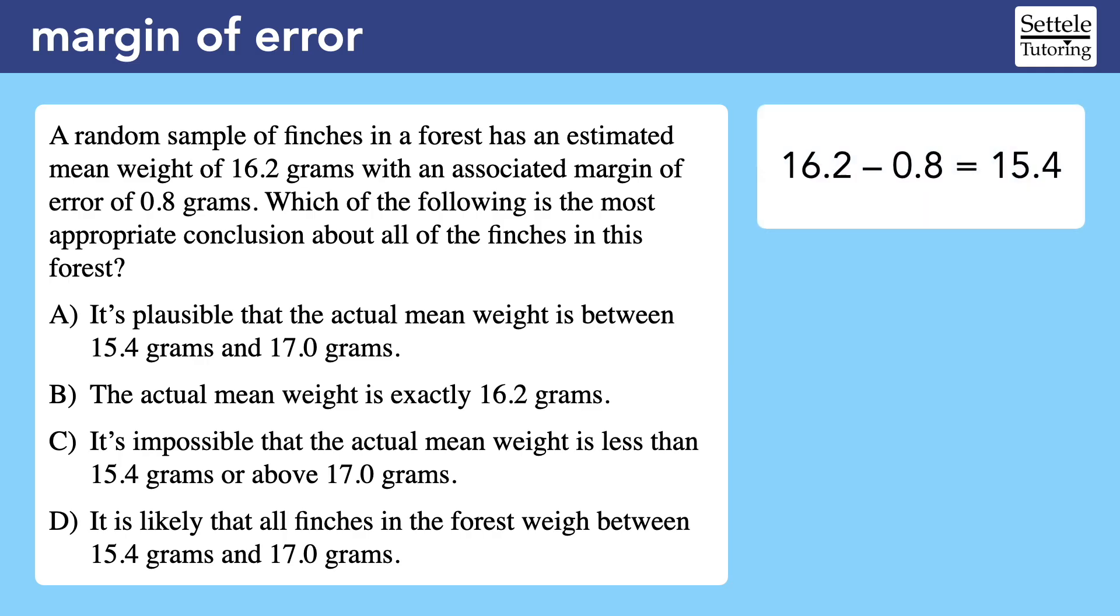16.2 minus 0.8 is 15.4, and 16.2 plus 0.8 is 17.0. This tells us that the actual mean is probably somewhere between 15.4 and 17.0. Choice A is the correct answer. It's plausible or likely that the actual mean weight is between 15.4 grams and 17.0 grams.